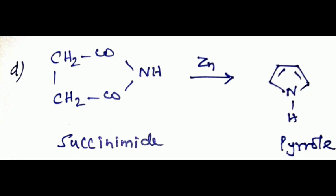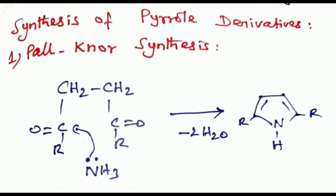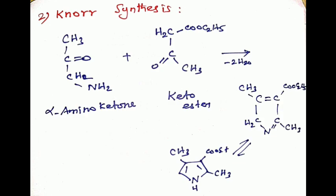Then next topic: synthesis of pyrrole derivatives. First, the Paal-Knorr synthesis, which is condensation of 1,4-dicarbonyl compound with ammonia or primary amine or hydrazine to give pyrrole derivatives with loss of water molecule. Second technique: Knorr synthesis, which is condensation of an alpha-amino ketone or alpha-amino beta-keto ester with another ketone having alpha methylene group to form pyrrole derivatives.